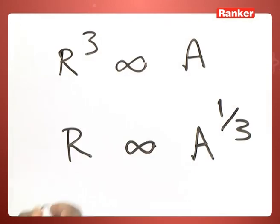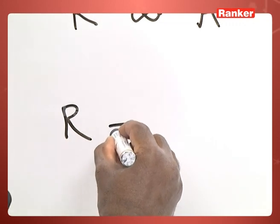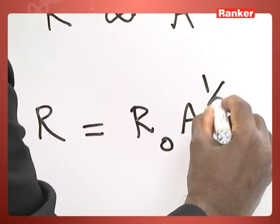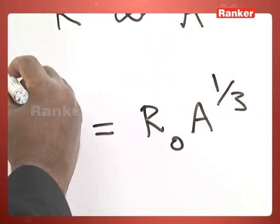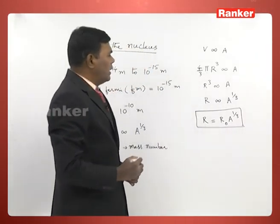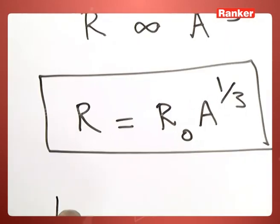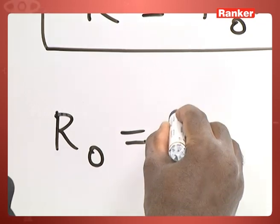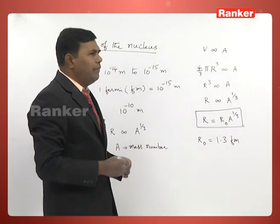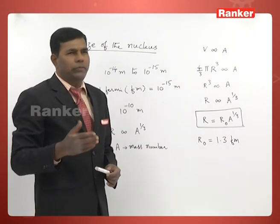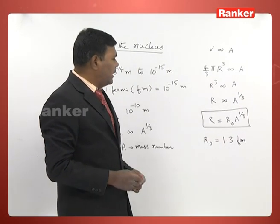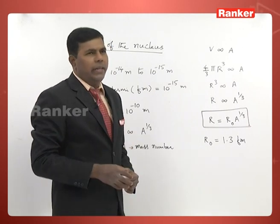If you replace the proportionality sign with an equality sign, we will get a constant R naught. So the relation between the radius of the nucleus and its mass number A is R equals R naught times A to the power 1 by 3. Here R naught is a constant whose value is about 1.3 Fermi. This R naught value slightly varies between 1.2 Fermi to 1.3 Fermi. We can take it as 1.3 Fermi. This is how we can measure the radius of any nucleus.